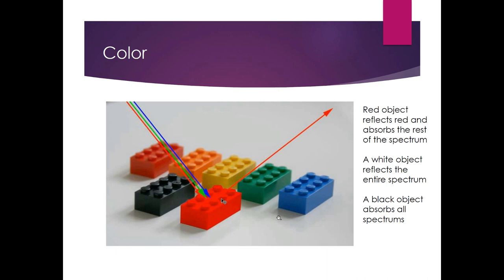Let's first talk about color. Most of you have probably heard this before, but what happens with objects is that the full spectrum of light is typically coming out, hitting a surface, and then what we perceive with our eyes is the color that is not soaked into the object — we're getting reflected back, say, the red. So in a strange way, you'd almost say it's not actually red, it's just perceived as red. White objects reflect the entire spectrum and black objects absorb all of it.